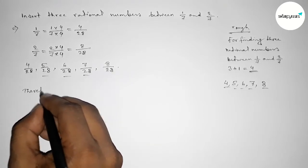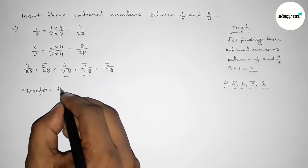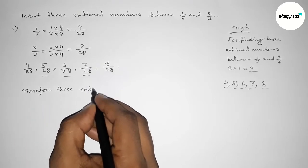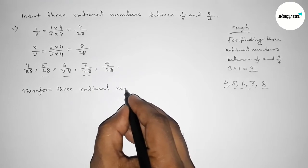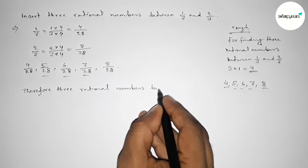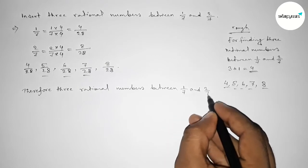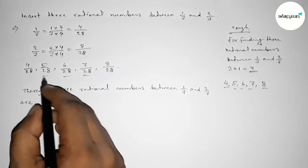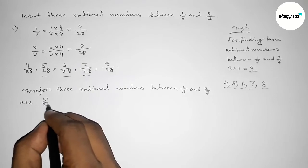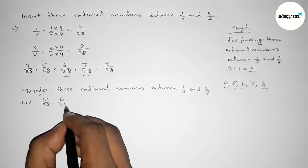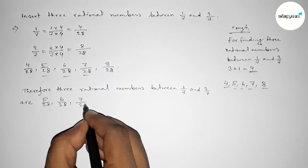Therefore, three rational numbers between 1 over 7 and 2 over 7 are: first one is 5 over 28, then 6 over 28, then last 7 over 28.